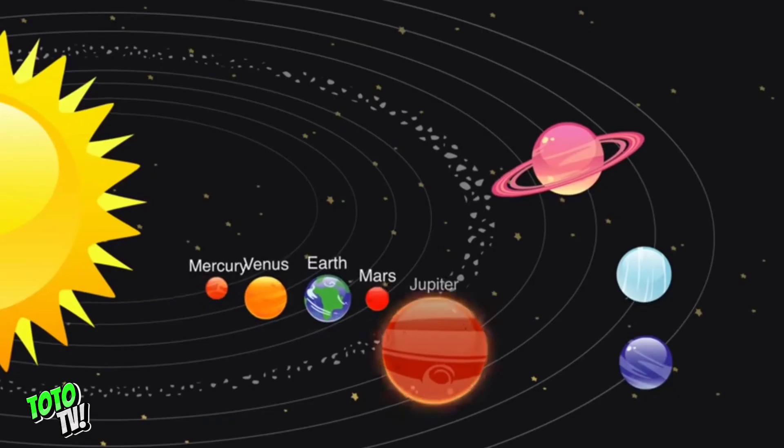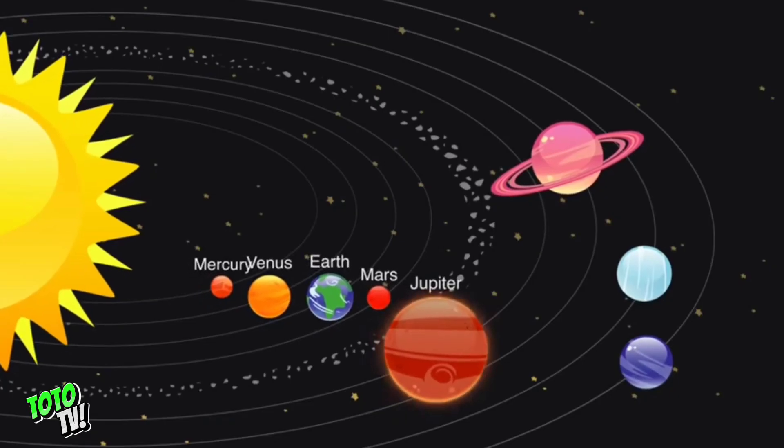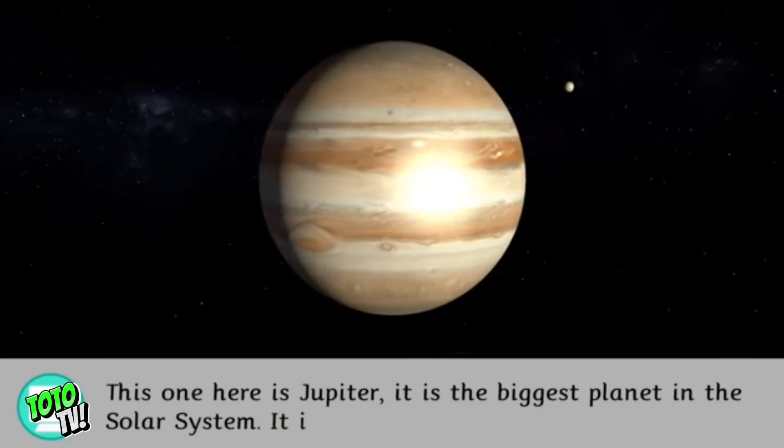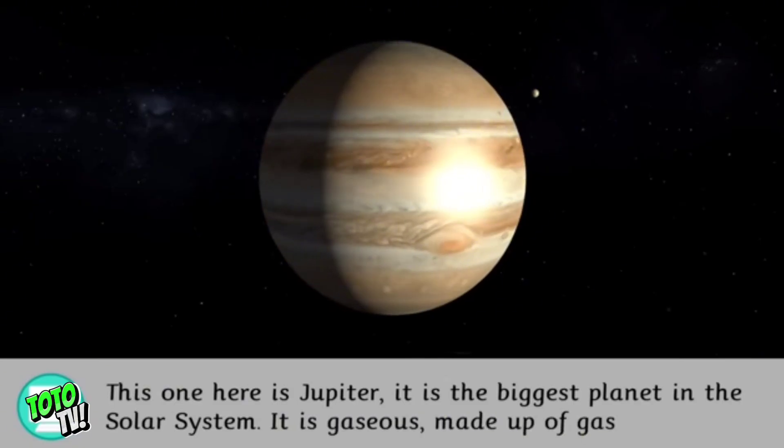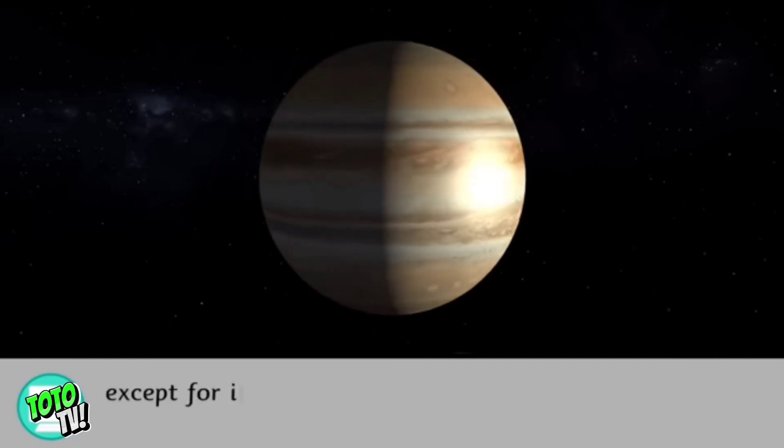This one here is Jupiter. It is the biggest planet in the solar system. It is gaseous, made up of gas and liquid, except for its core that is rock.